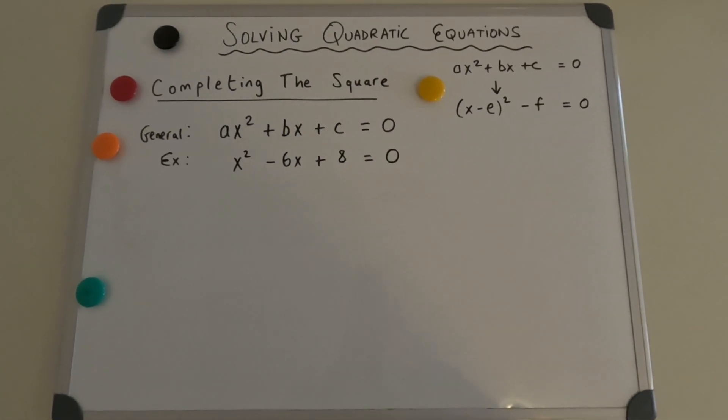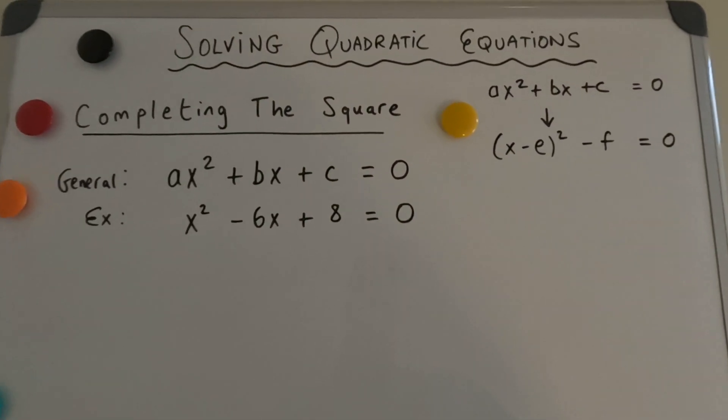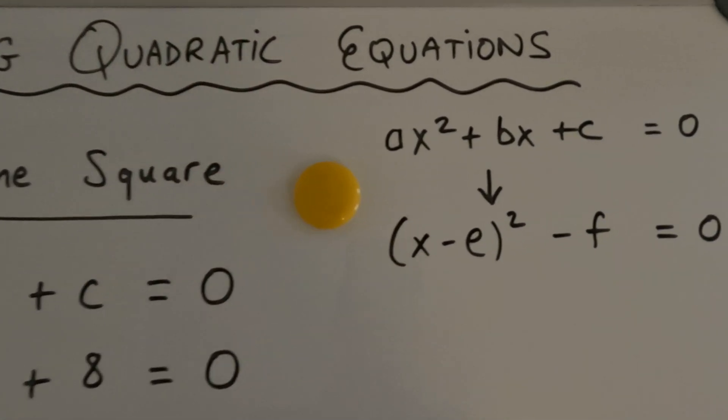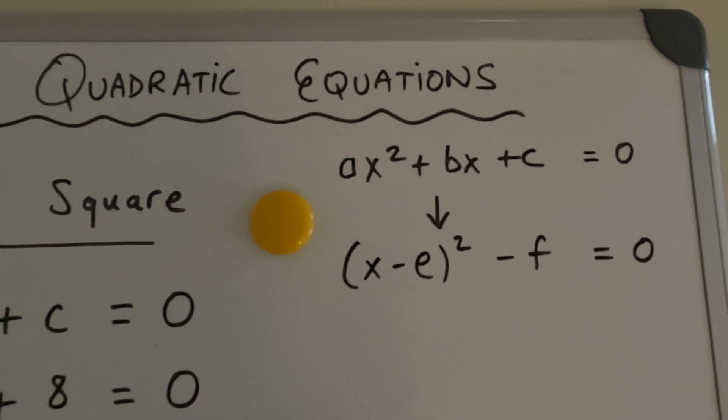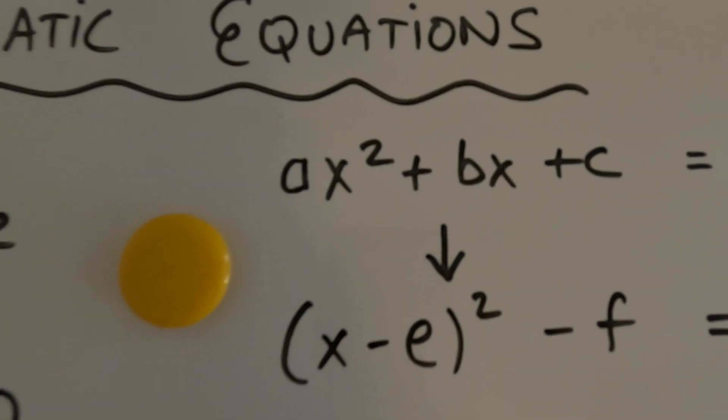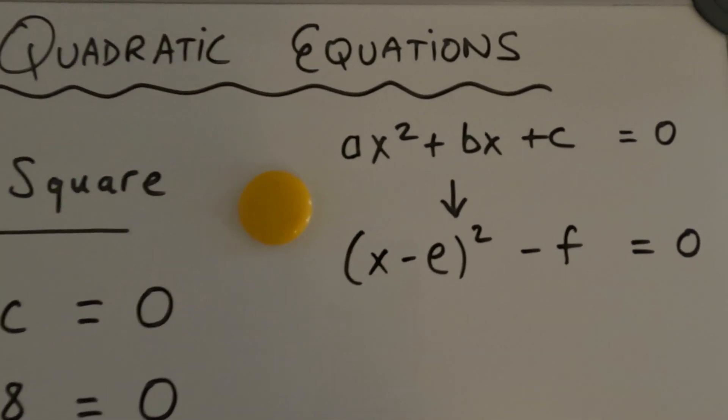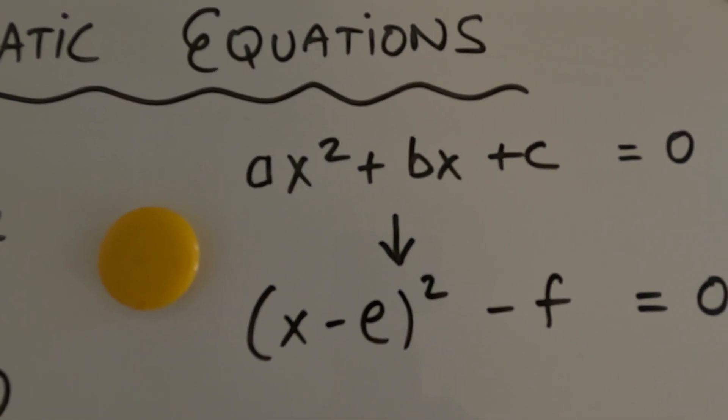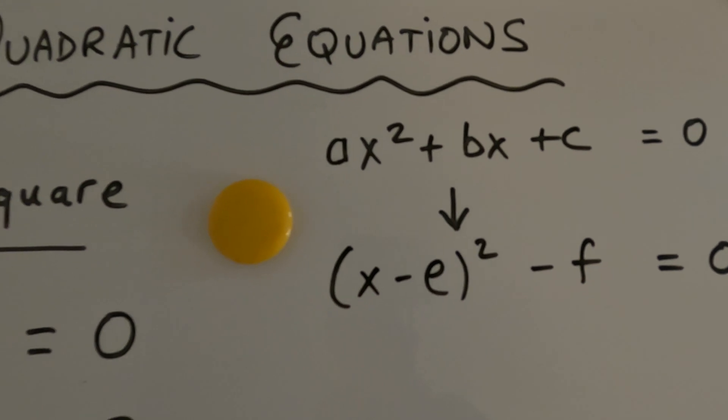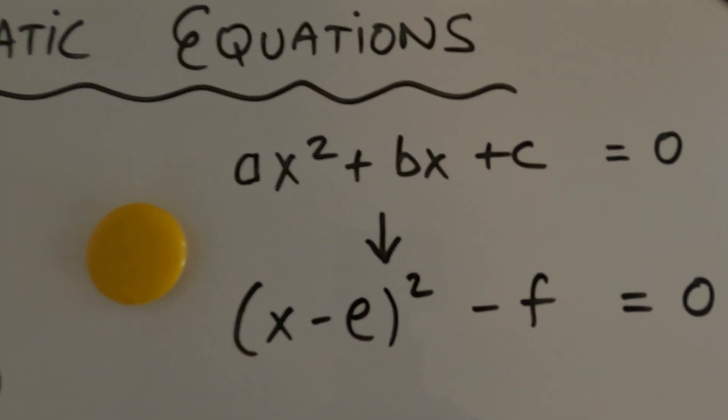Hello and welcome to the video. Today we're going to be looking at solving quadratic equations. Quadratic equations are of the form ax squared plus bx plus c equals zero. So they have an x squared term, so the degree is two, unlike straight line or linear equations which have a degree of one. So they are of the form ax plus b equals zero. So this is one degree higher.